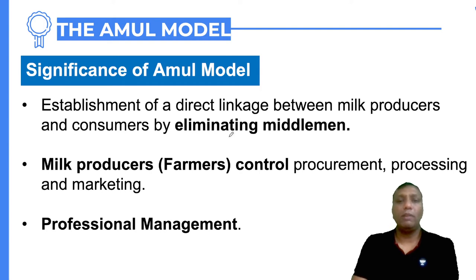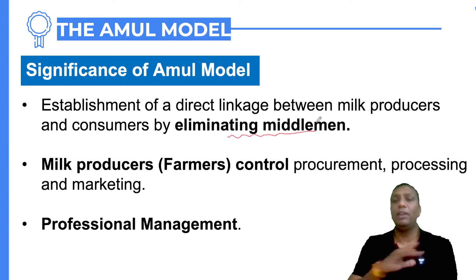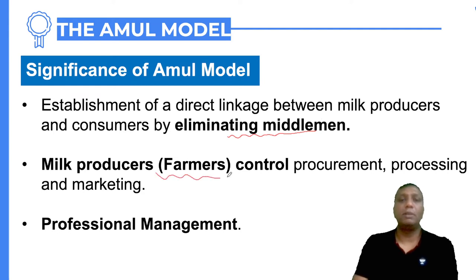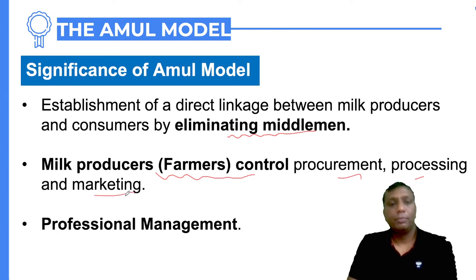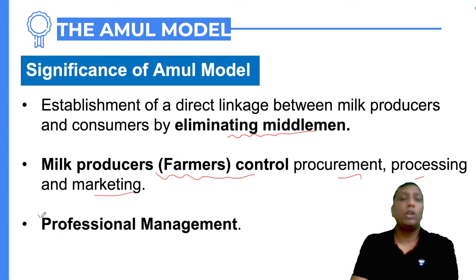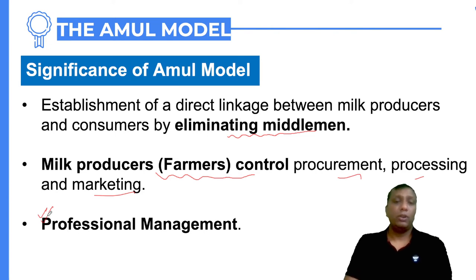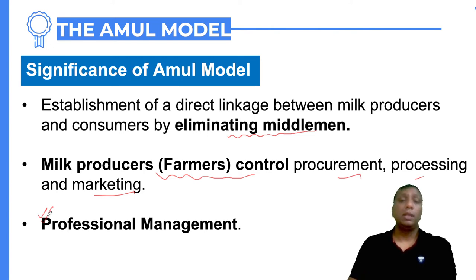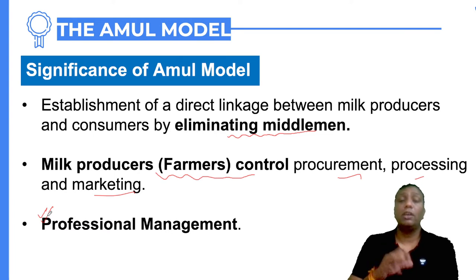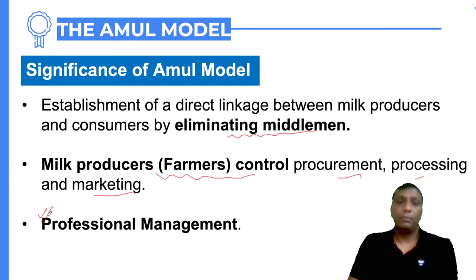The significance of the Amul model is the total elimination of the middleman. Milk producer farmers now have direct control over milk procurement, milk processing, and milk marketing. It is a kind of totally professional management. Additionally, senior management takes care of the emotional connection farmers have with their dairy operations, since rural people are emotionally connected with their industries.